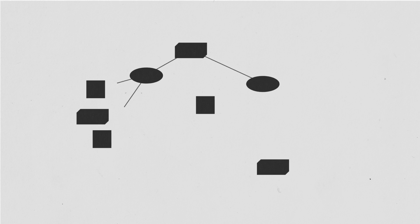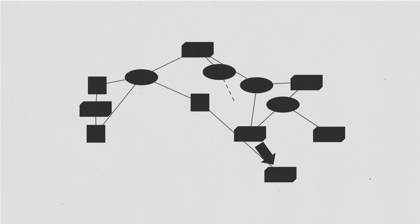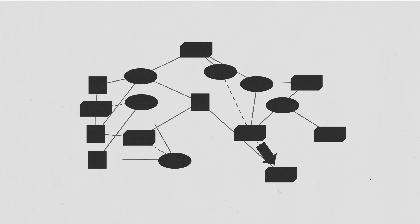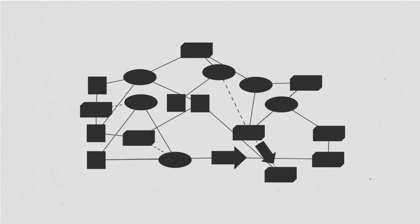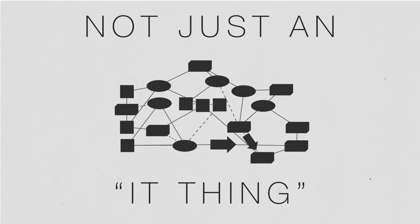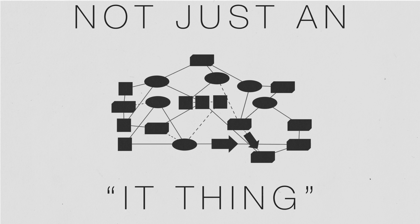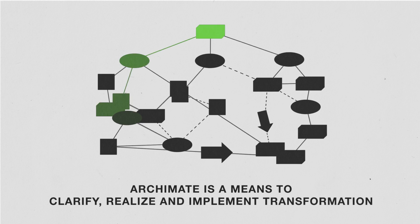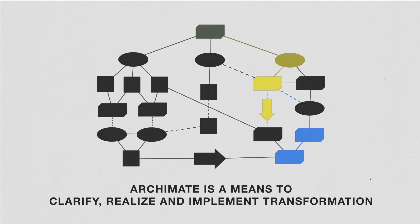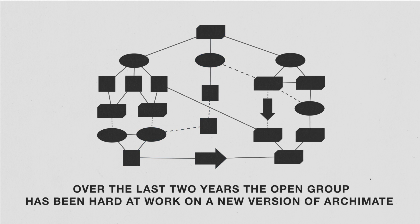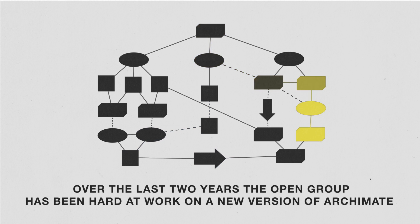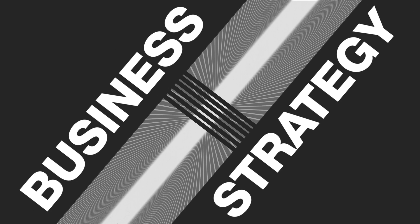So, where are we now? Well, firstly, and probably most importantly, we're in a much more dynamic and disruptive environment. Organisations are surviving on their ability to change, and more and more organisations are recognising that enterprise architecture is not just an IT thing. This has led to a growth in Archimate being regarded as a means to clarify, realise, and implement transformation. So, over the last two years, the Open Group has been hard at work on a new version of Archimate that covers the gap between business and strategy.